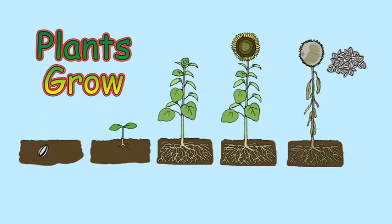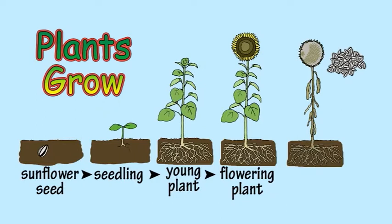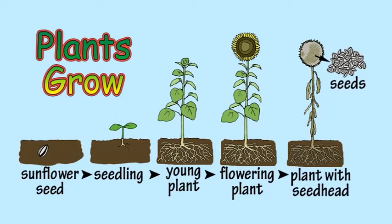Plants grow. If you plant a sunflower seed, over time it will sprout and grow into a tall sunflower plant with a strong stem, many leaves, and a big flower at the top that will eventually produce lots of sunflower seeds. At the same time as the sunflower plant grows taller above ground, below the surface of the soil, the roots of the sunflower plant spread.